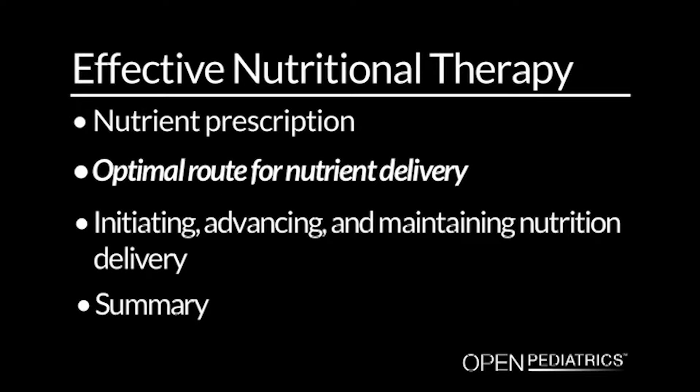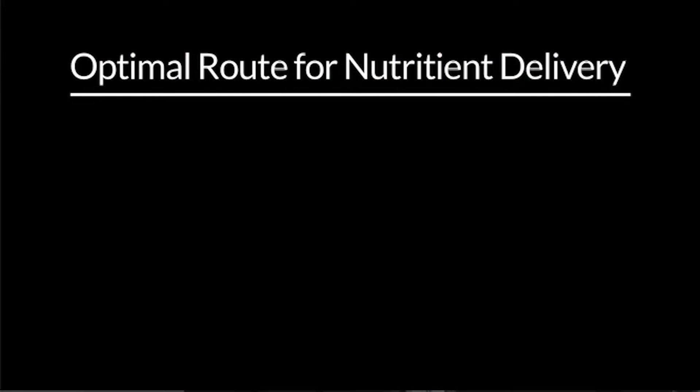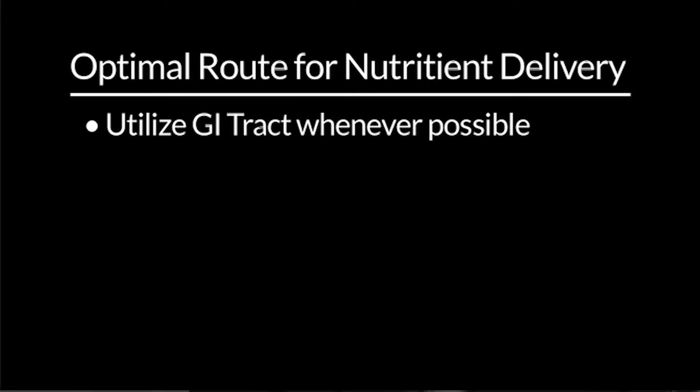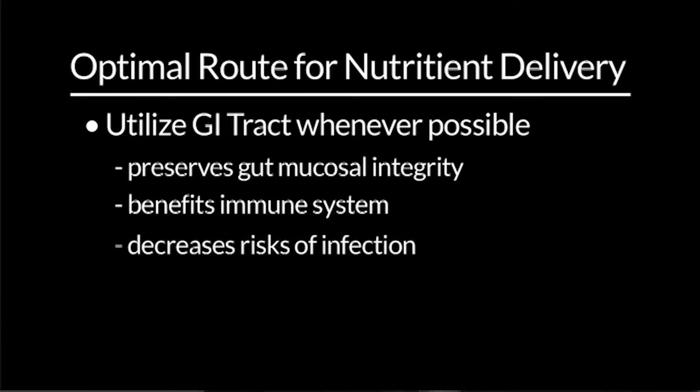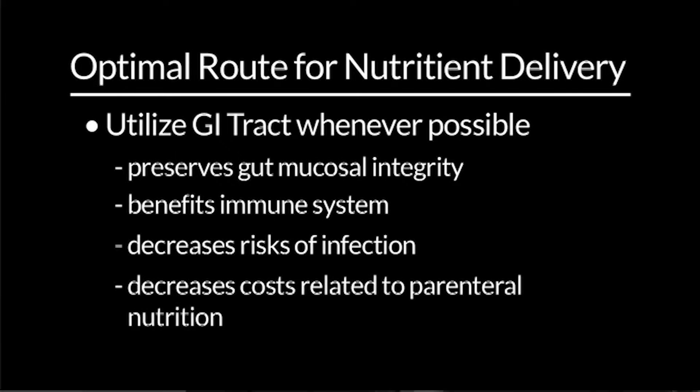Let us now look at the optimal route for nutrient delivery. Once we determine the optimal energy and protein intake amounts, selecting the best route for a particular patient is important. Current consensus in both adult and pediatric critical care is to utilize the gastrointestinal tract if it is working. Enteral nutrition is preferred as it preserves gut mucosal integrity, has beneficial immune effects, and decreases the risks of infection as well as costs associated with parenteral nutrition.